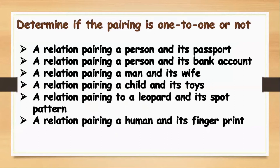Let's continue with other examples — determine if the pairing is one-to-one or not. Number one: a relation pairing a person and their passport. Have you seen two persons sharing only one passport? No. And have you seen one person having different kinds of passports? That's not possible either. One passport for one person in every country, so this is a one-to-one function.